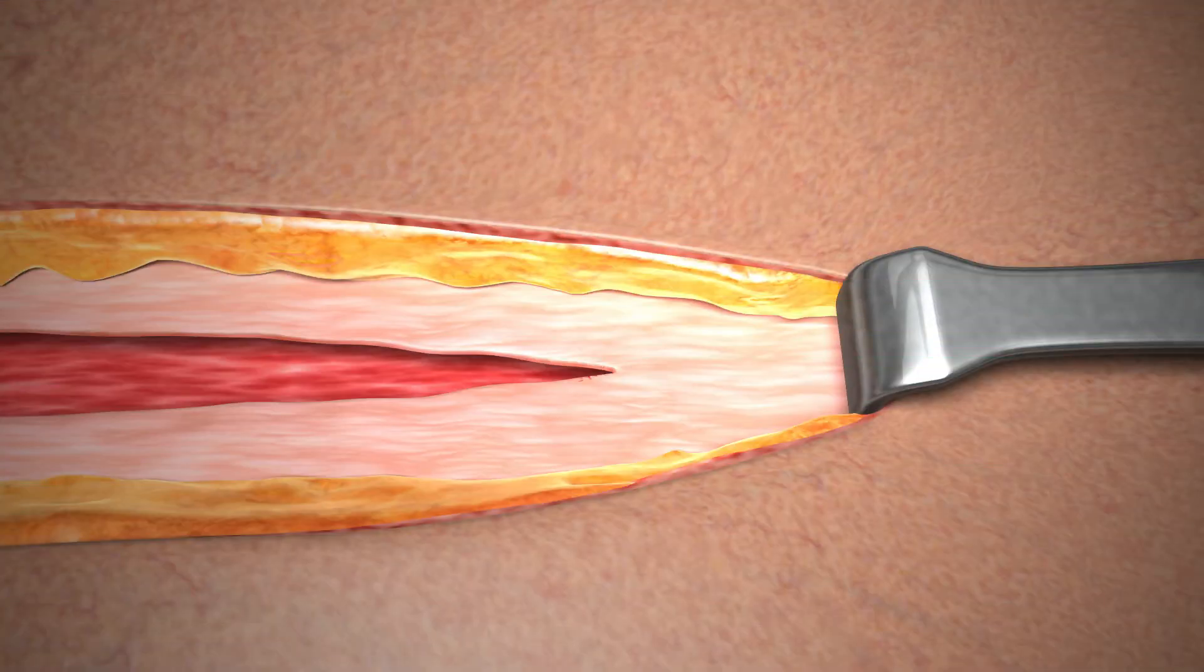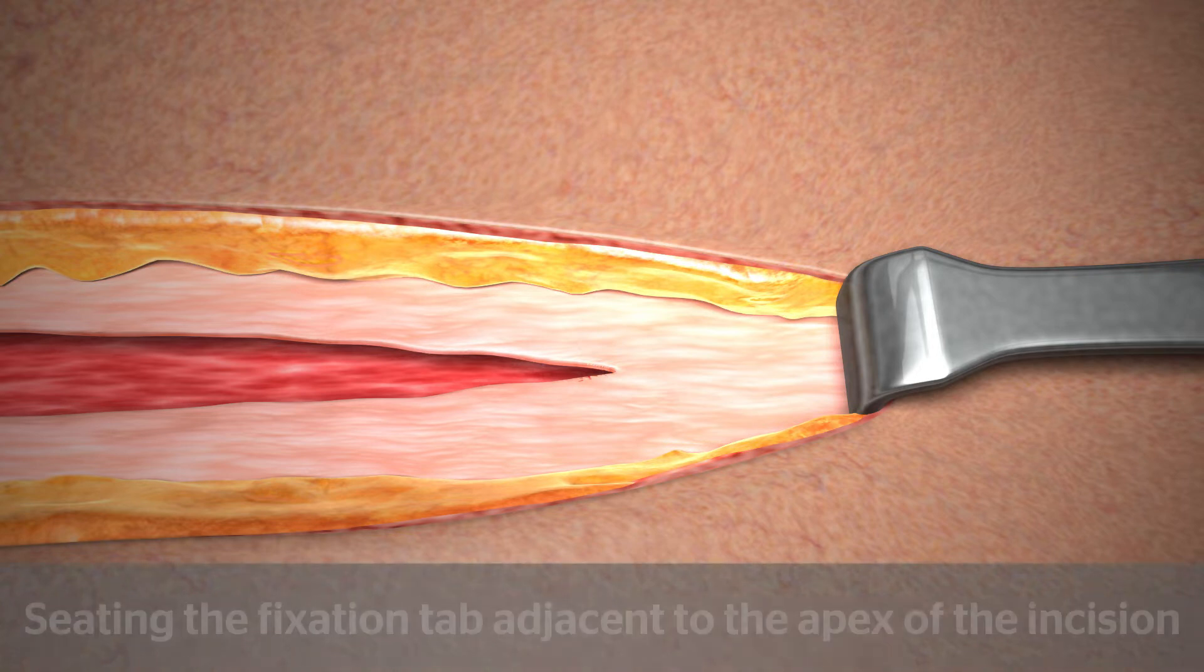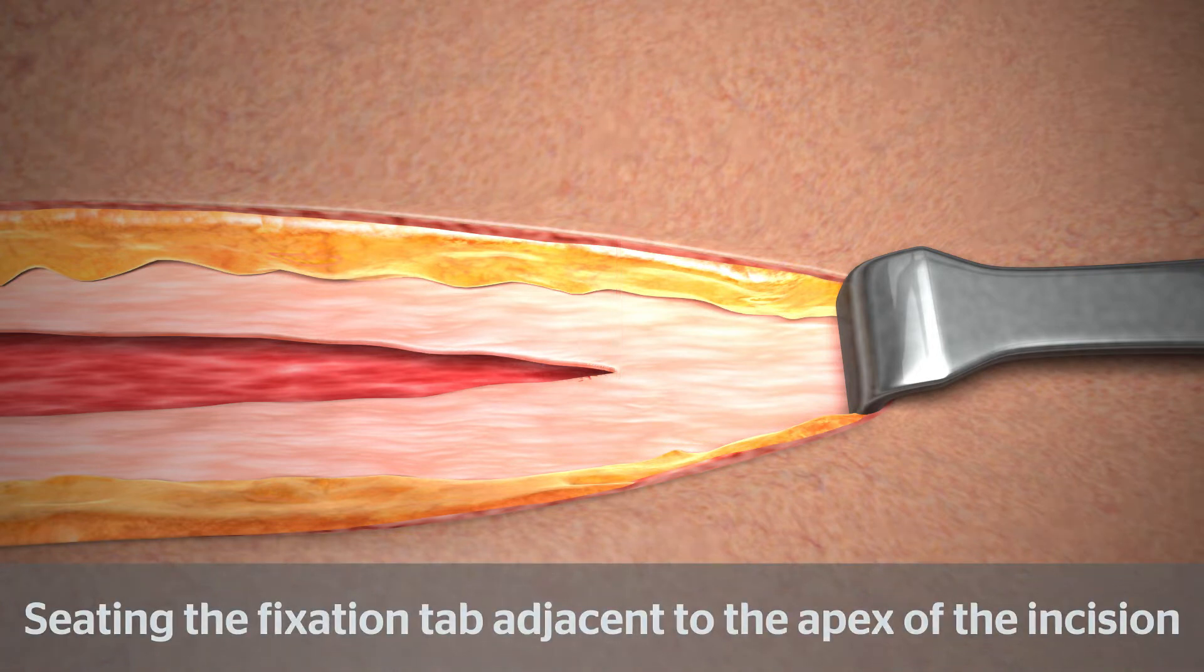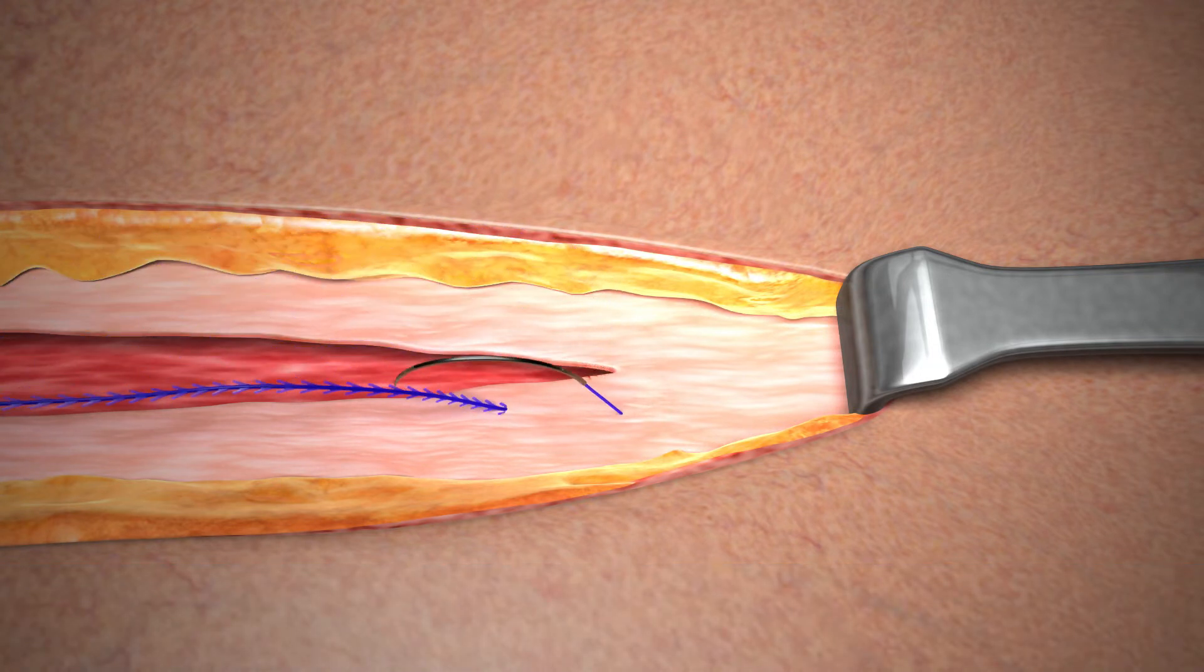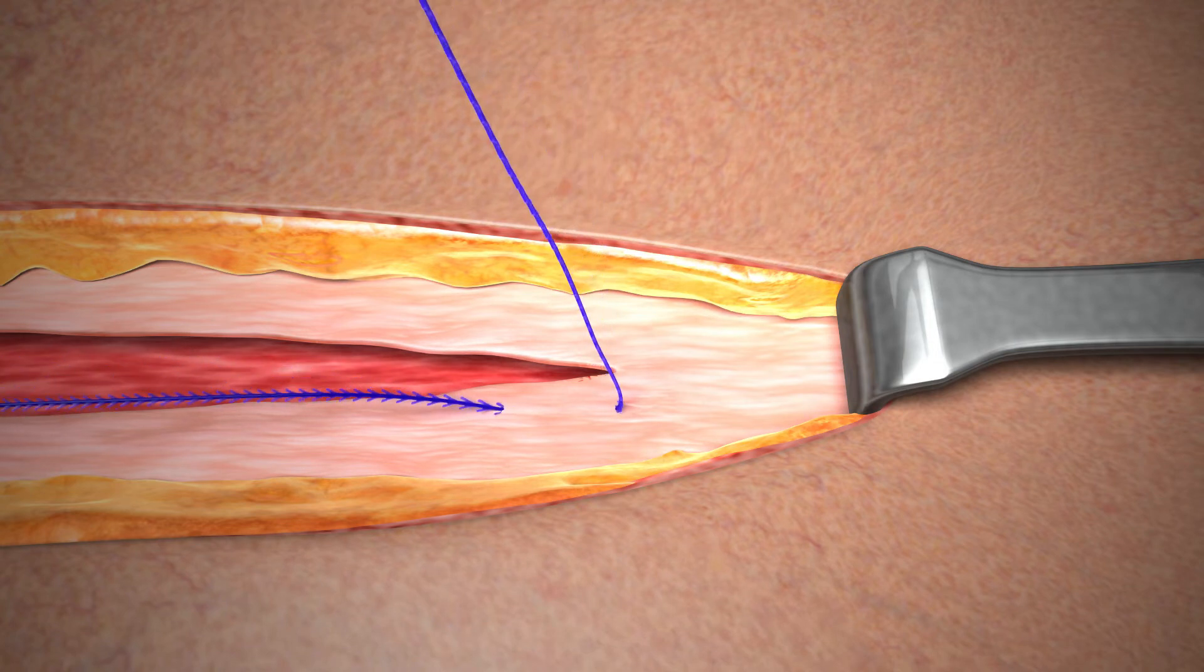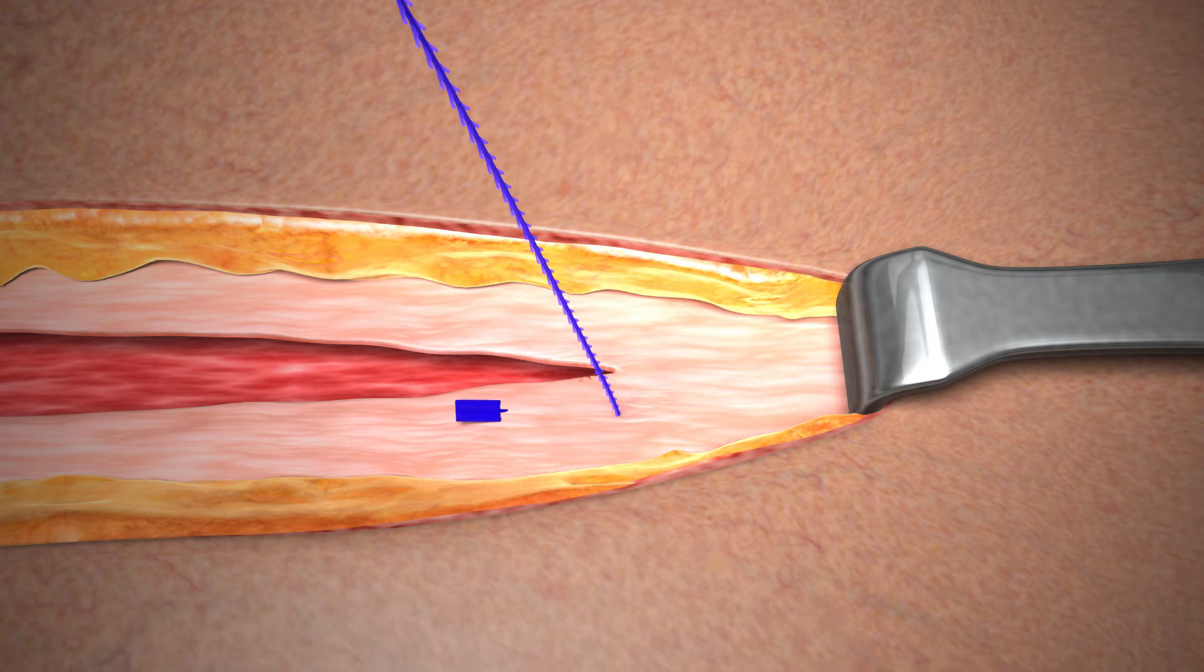Now let's take a look at the second initiation technique. In the second technique the fixation tab is seated adjacent to the apex of the incision. To seat the fixation tab take the first pass in intact tissue adjacent to the apex in a direction away from the incision. Pull the device through the tissue to gently seat the fixation tab. The fixation tab should be seated above the intact tissue so that it remains visible. Do not exert additional force on the fixation tab or device.